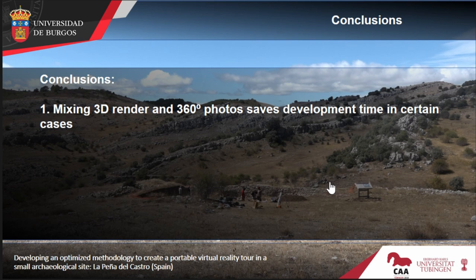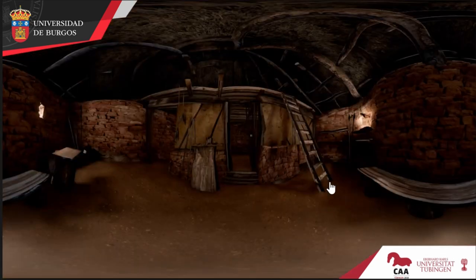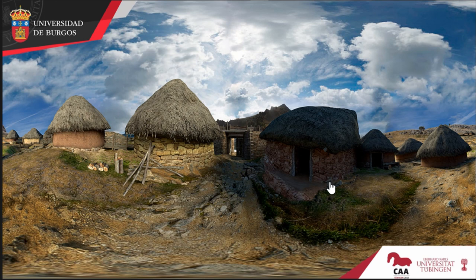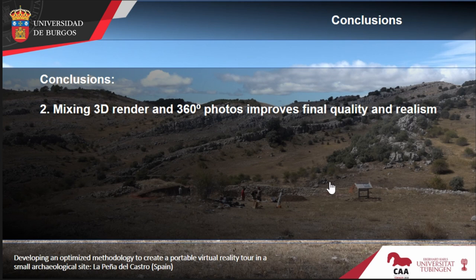In conclusion, we think that mixing 3D renders and panoramic photos saves development time in certain cases — maybe not all cases, but you can save a lot of time by not worrying about modeling the ground, landscapes, or mountains; there are many models that don't need to be done. We also think it improves the quality and realism of the views because we can mix panoramic views and 3D models together. It could always be better, but in a project with a lack of funds it's a good option.